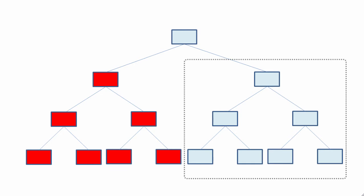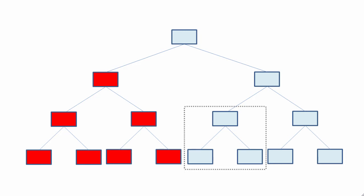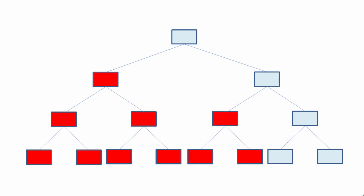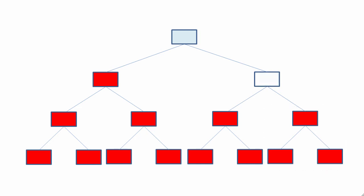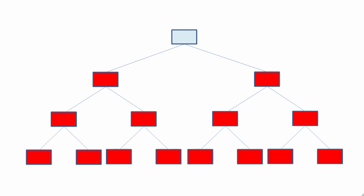Now we move on to the right subtree of the main root, starting with the left subtree: left, right, root. Then we examine the right subtree: left, right, root. Since we've examined the left and the right subtree, we examine the root. And now that we've examined the left and right of the main tree, we can finally examine its root.